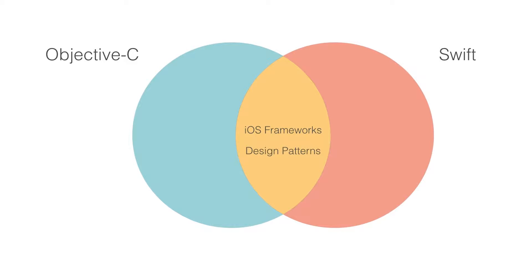Let's dive deeper into the similarities. Building the portfolio apps for the iOS NanoDegree, you've become intimately familiar with the classes in Foundation and UIKit. Those classes are bridged to Swift. But as you may know by now, many of those classes are actually written in Objective-C. This means that the way they're used in Objective-C will look and feel very similar to the way you use them in Swift.